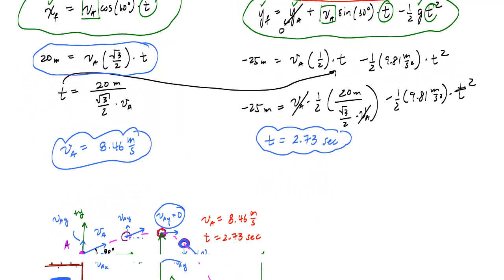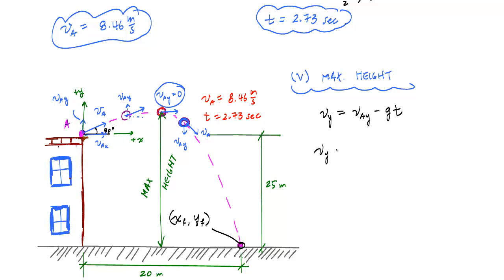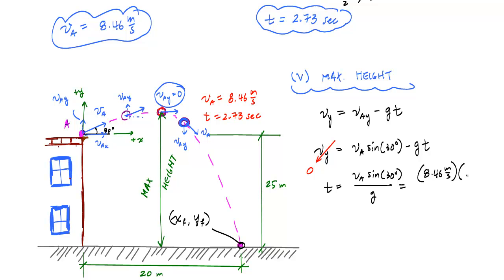Using the vertical velocity equation: vy equals VA sine of 30 degrees minus g times t. At maximum height vy equals 0, so I can solve for time. My only unknown is t. So t equals VA sine of 30 degrees divided by g, which is 8.46 m/s times one-half divided by 9.81 m/s². That gives t equals 0.431 seconds to reach maximum height.